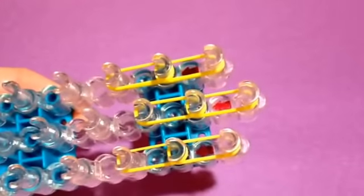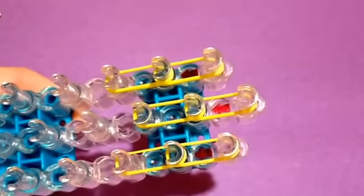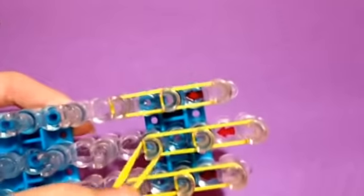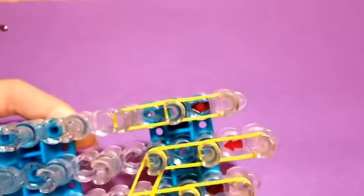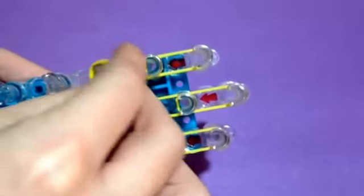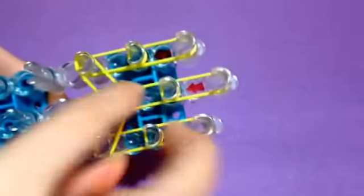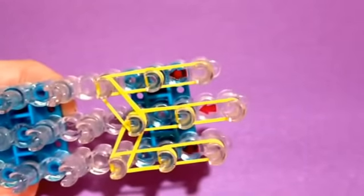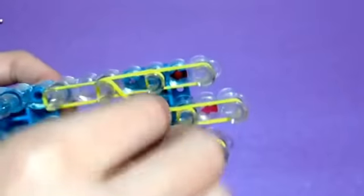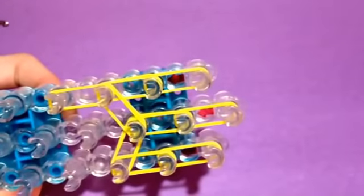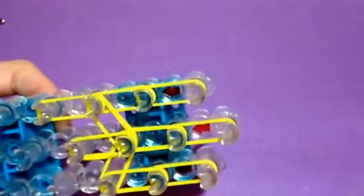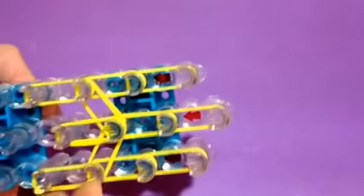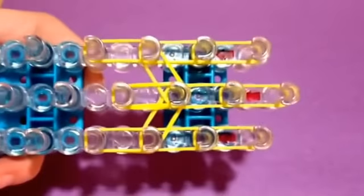Now, we will do the part that keeps the fries all together. So, two bands and go from here to here, and two bands and go from here to here. This allows the fries to stay together. Now, taking two more yellow, go down, two more yellow, go down. This is what it will look like when you've placed all your yellow bands.